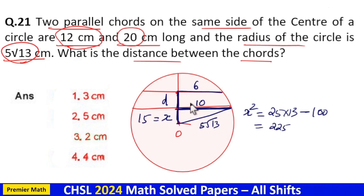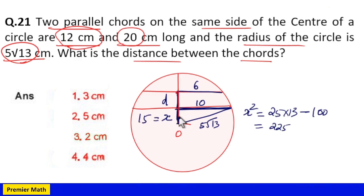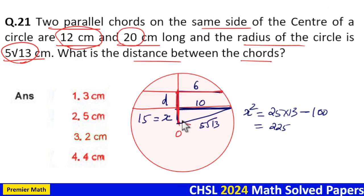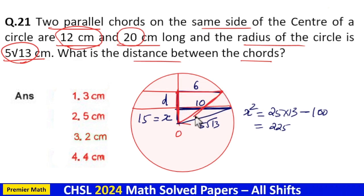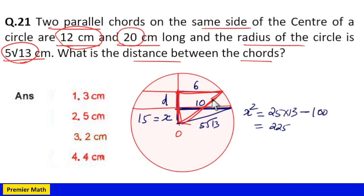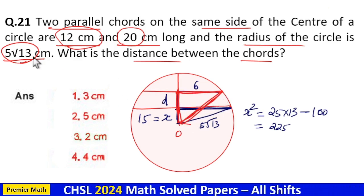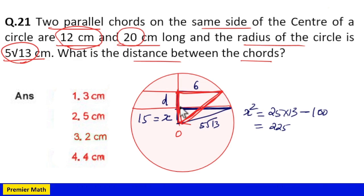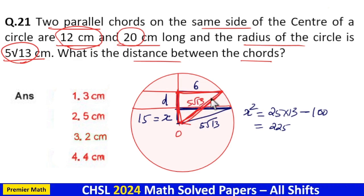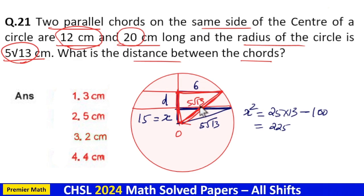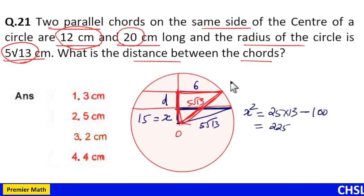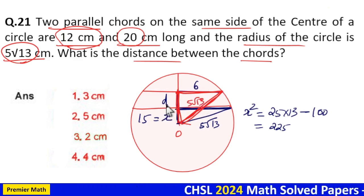Now that x = 15, from the right-angled triangle formed with the 12 cm chord, the radius is again 5√13. We can now find d.